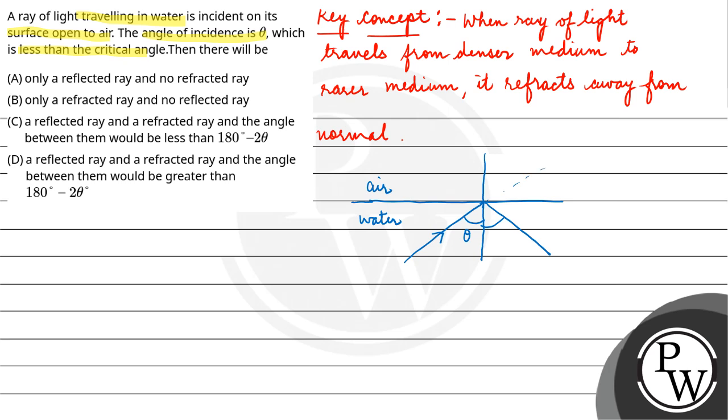it will refract and it will bend away from the normal. This is angle of refraction and angle of reflection is equal to angle of incidence, i is equal to r by the first law of reflection.